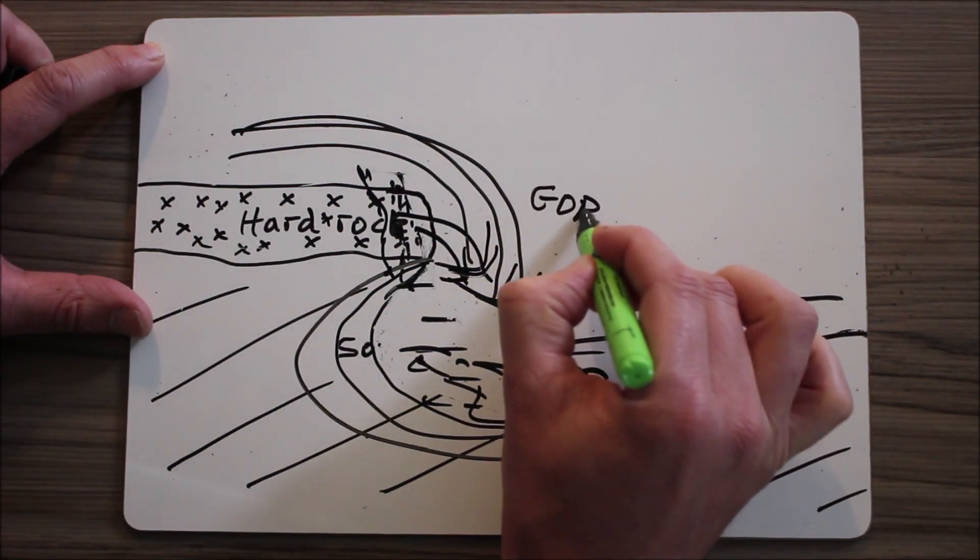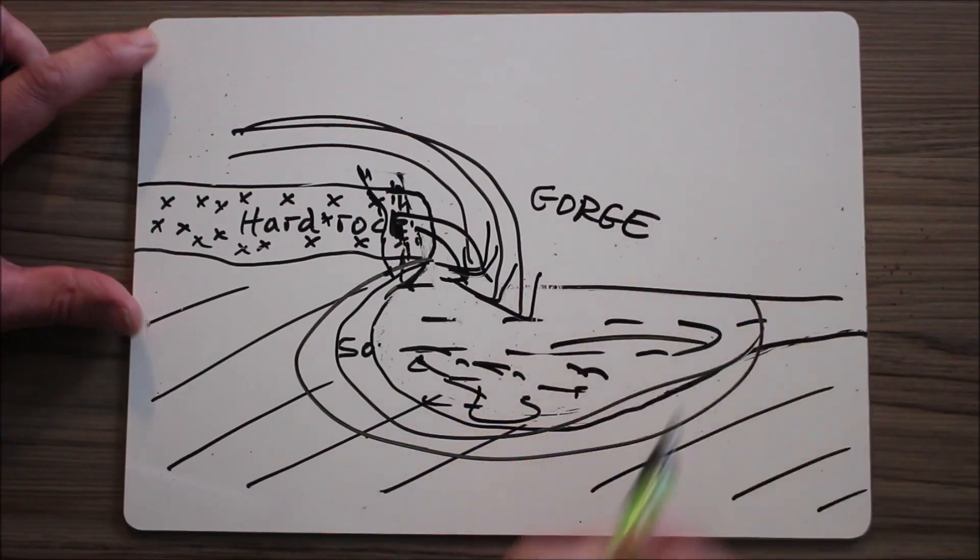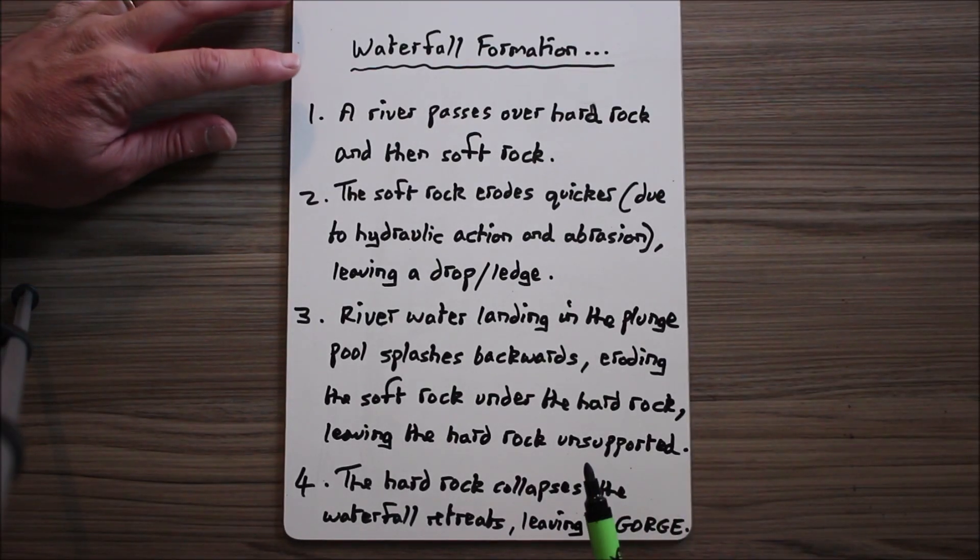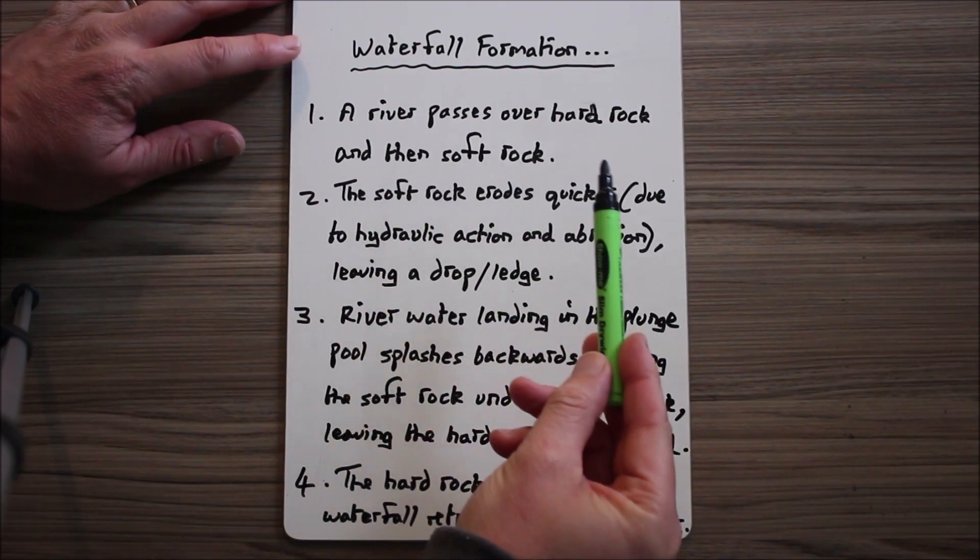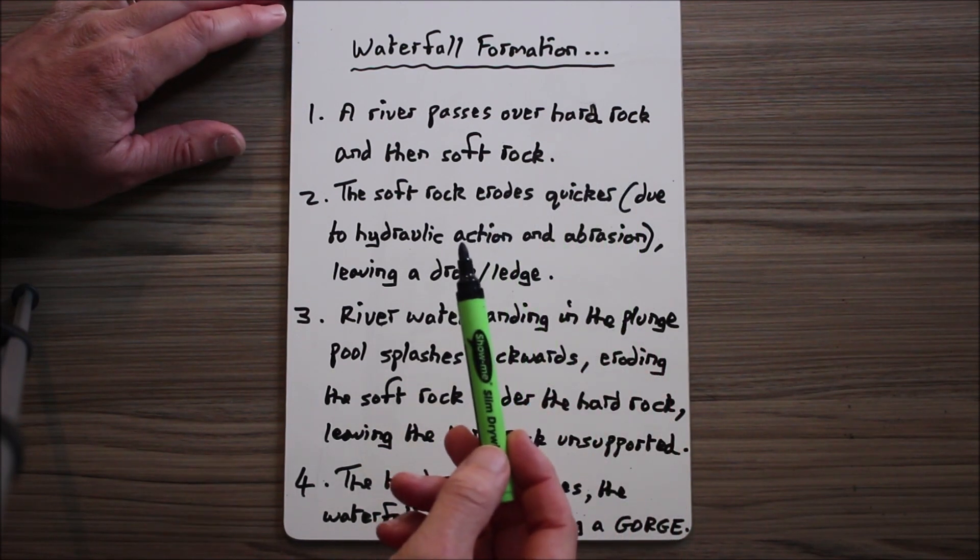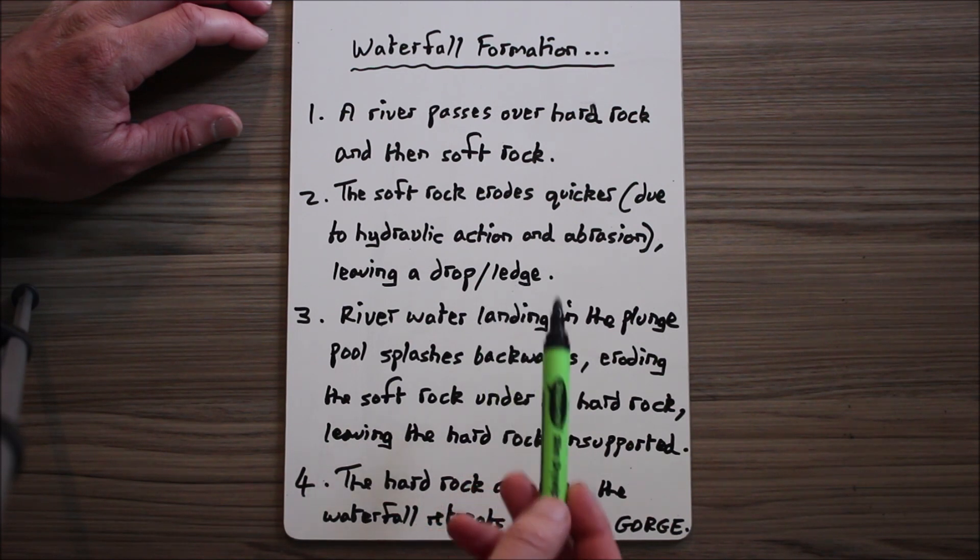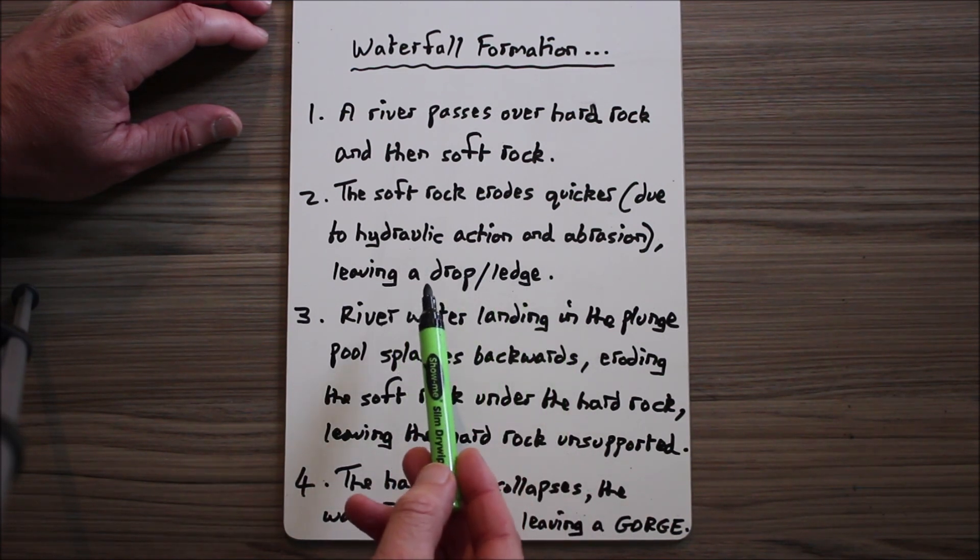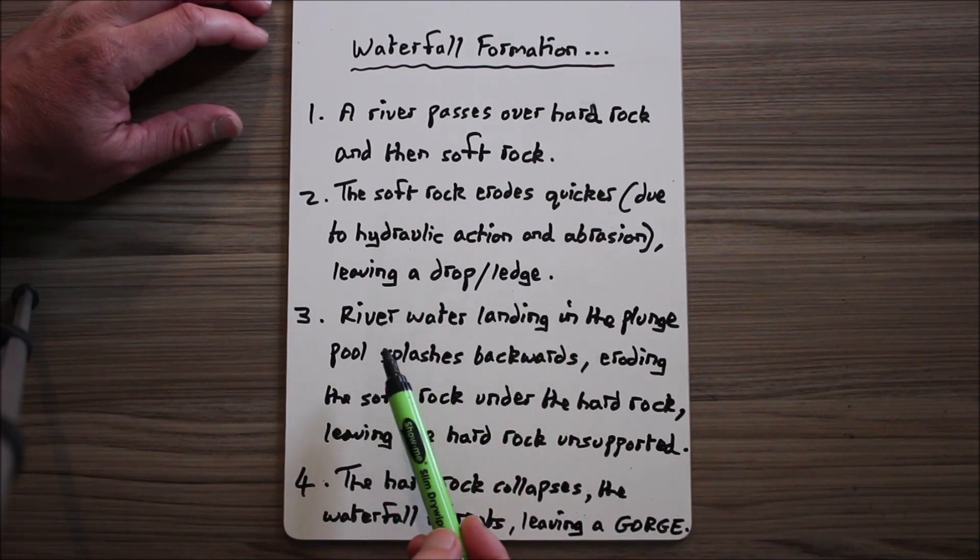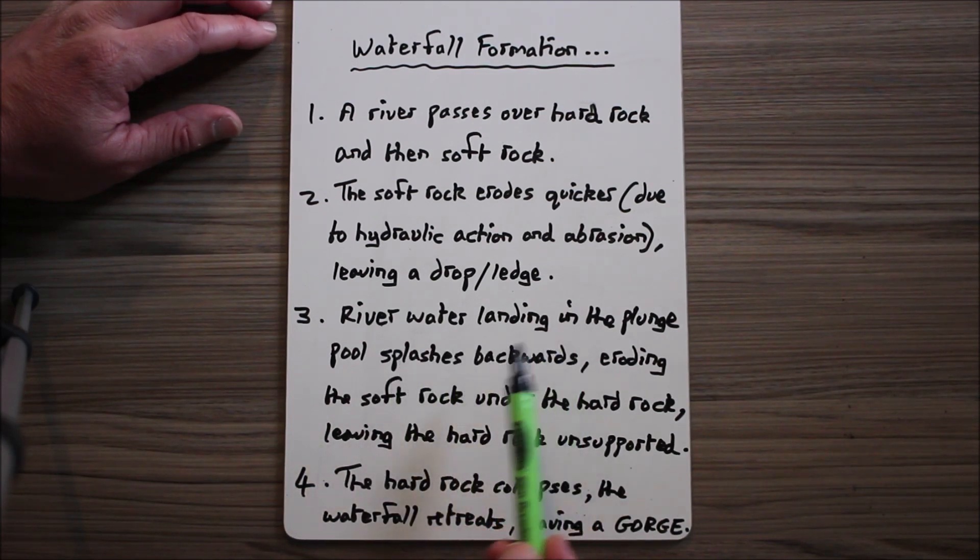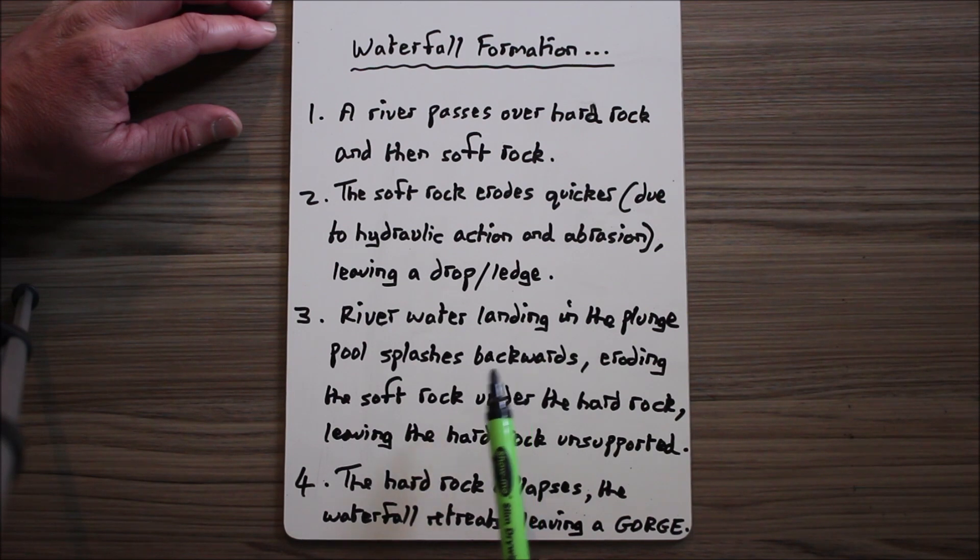Let us summarize what we've just learned. A river passes over hard rock and then soft rock. The soft rock erodes away quicker due to hydraulic action and abrasion, and this leaves a drop the water can fall over. The river falls over the drop and lands in the plunge pool.